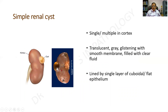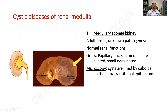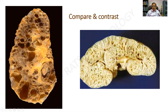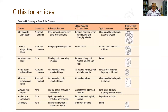A simple cyst can be found in the cortex, usually solitary and small but can be large. It is glistening, lined by a single layer of cuboidal or flattened epithelium, and most cases are incidental findings. The medullary sponge kidney is an adult-onset condition of unknown pathogenesis where the papillary ducts in the medulla are dilated, with a cortex outside and medulla inside, lined microscopically by cuboidal or transitional epithelium. A tabular summary from Robbins covers all cystic diseases including mode of inheritance, pathological features, complications, clinical features and ultimate outcome.